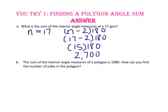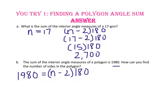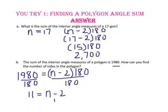In part b, the sum of the interior angle measures of a polygon is given — it is 1,980. To find the number of sides, let's work backwards. We set the equation n minus 2 times 180 equal to 1,980, then divide both sides by 180, giving us 11 equals n minus 2. Adding 2 to both sides, the number of sides the polygon has is 13.